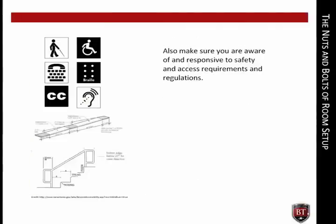Also make sure you are aware of and responsive to safety and access requirements and regulations. These include room capacity restrictions, fire codes relating to chair and table spacing, capacity of egress points, type and source of lighting, signage, heights of stairs, ramps, risers, and handrails, ventilation and fire protection devices, as well as ADA regulation compliance.